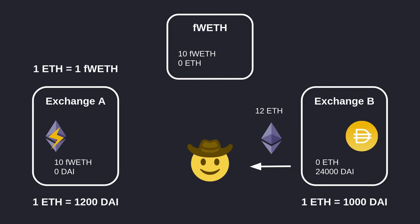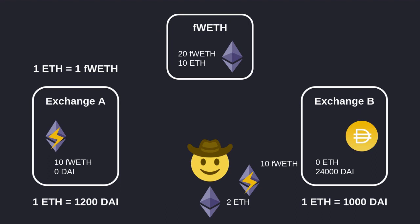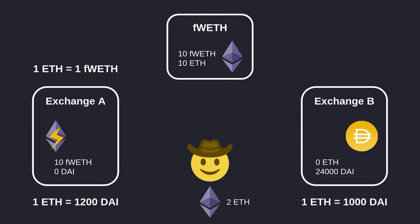Although exchange A had 0 ETH, because it accepts fWETH we were able to exchange DAI for fWETH. We take this DAI to exchange B and buy ETH. Now at the end of the transaction the 10 fWETH that we minted will be destroyed, but we don't own any fWETH — we gave it to exchange A. So in order for the transaction to succeed we mint another 10 fWETH by sending 10 ETH back to the fWETH contract. Now the fWETH contract has 10 ETH, exchange A has 10 fWETH, and we have 2 ETH in profit plus another 10 fWETH.